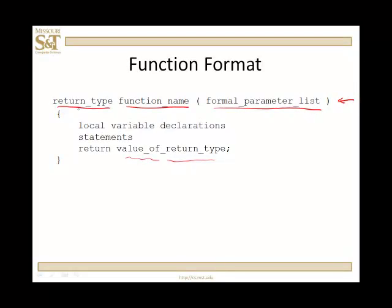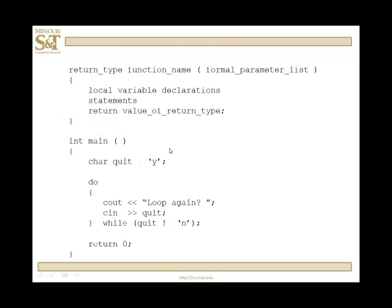In the function body you have local variable declarations, statements, and a return statement that returns the value of the return type. Whatever this return type is, you're going to send back a value that instantiates it. Does it look familiar? Well, it should — this is exactly what you do when you write a main program. You've actually written functions already.